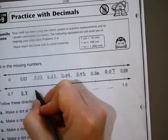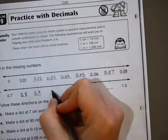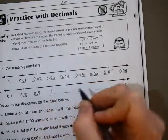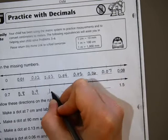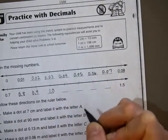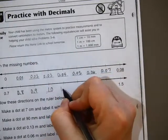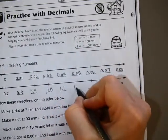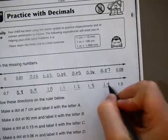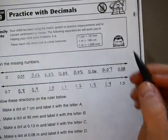So, 0.8, 8 tenths, 0.9, 9 tenths. And this is going to be 1, this is 10 tenths. And then there's our secret decimal. If you want to put it there, you can even add a 0 after it if you wanted to. And now this is going to be 1 and 1 tenth, 1 and 2 tenths, 1 and 3 tenths, and 1 and 4 tenths. And that equals a pattern, 1 and 5 tenths.